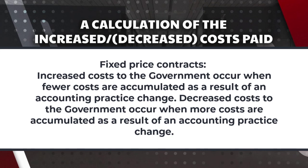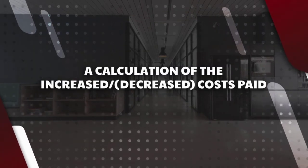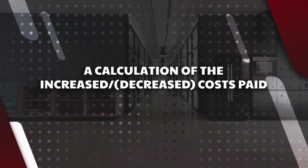For fixed price contracts, increased costs to the government occur when fewer costs are accumulated as a result of a cost accounting practice change, and decreased costs to the government occur when more costs are accumulated as a result of an accounting practice change.